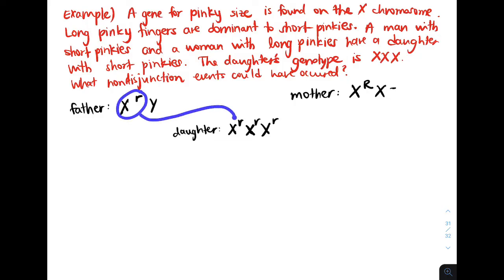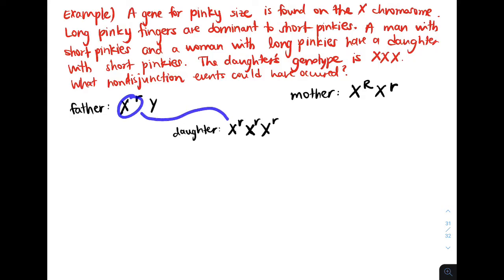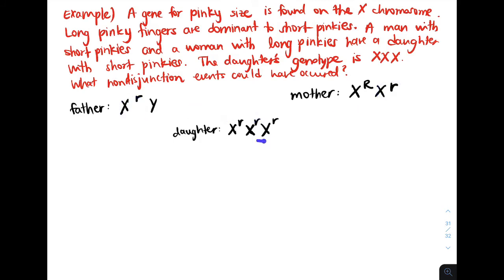So all three X's have the recessive allele. We can be sure that the father contributed at least one X little r, and not a Y because the daughter is female. The mother must have contributed at least one little r, so her second allele is an X little r. If we know that the father contributed an X little r allele and the mother also contributed an X little r, then the third X little r must have come from a non-disjunction event. But since both parents have the X little r chromosome, non-disjunction could have happened in either parent.